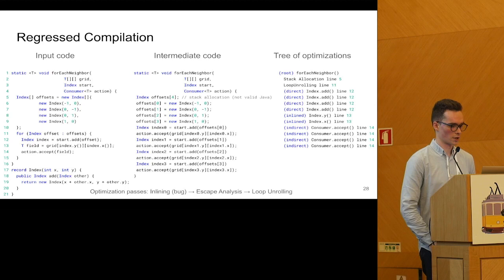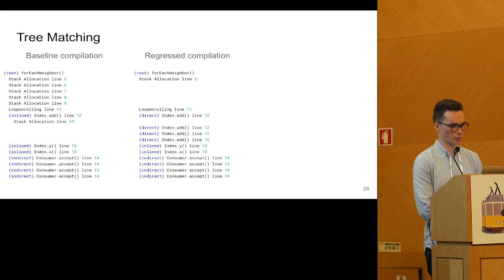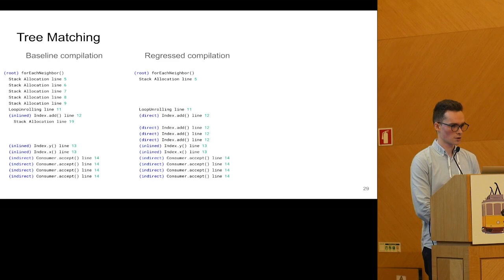This is the end of the regressed compilation where we had a bug in the inliner that led to a different compilation outcome. We could not place all the allocations on the stack and we recorded that as a tree on the right. These trees are part of the optimization logs, and if these compilation units are frequently executed according to our profiles, our tool will give us the differences.